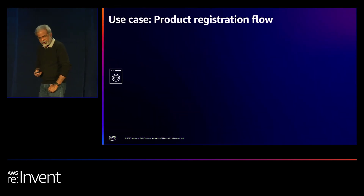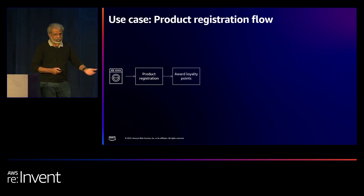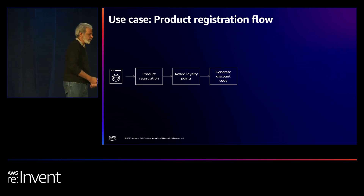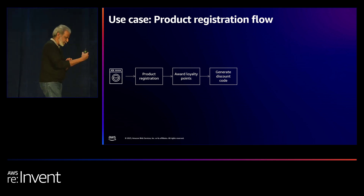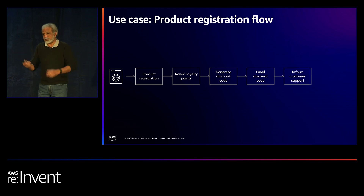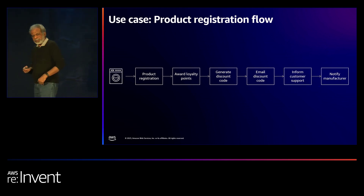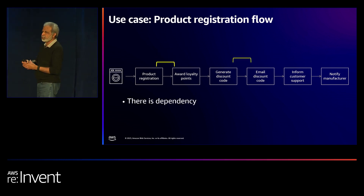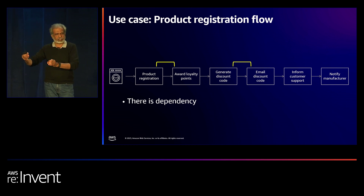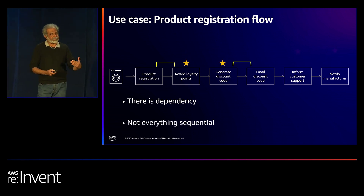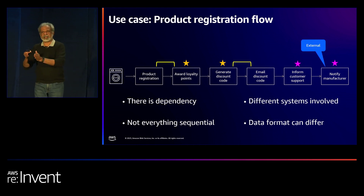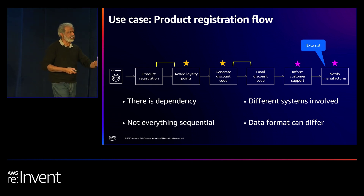Let's take an example. You bought kitchen equipment and want to register it. When you register, you get loyalty points, discounts for your next purchase, the customer service is informed, and the manufacturer is notified. It looks simple and sequential, but not everything needs to be that way. There are dependencies — you need to register a product to generate loyalty points, you need a discount code before someone can email it — but loyalty points computation and discount code generation can happen in parallel.